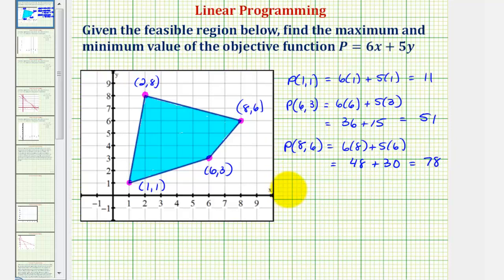And finally we have P(2, 8), so we'd have 6 times 2 plus 5 times 8, which equals 12 plus 40, which equals 52.